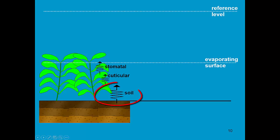When the top soil is very dry, the resistance for soil evaporation will be very large. When the stomata are open, the stomatal resistance is small. Cuticular resistance normally is very big. These resistances are grouped together in the surface resistance.